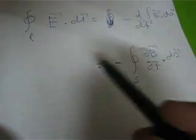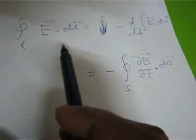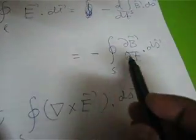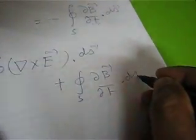The left-hand side is a line integral, so it can be converted into a surface integral using Stokes' theorem on vectors. Using Stokes' theorem, the left-hand side can be written as the surface integral of curl of E dot dS. We may then write: the surface integral of curl E plus del B by del t dot dS equals zero.